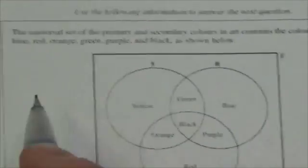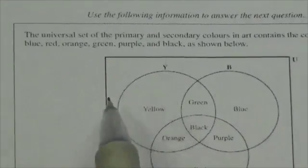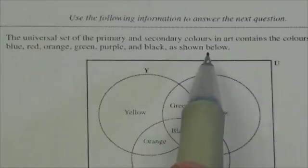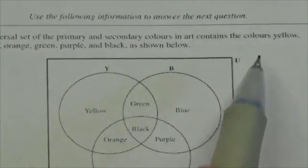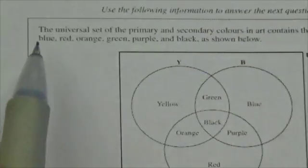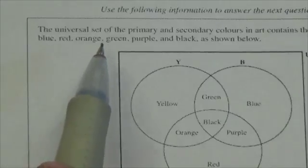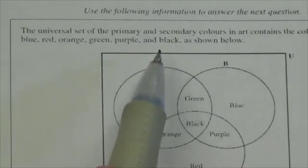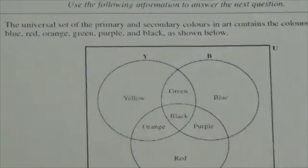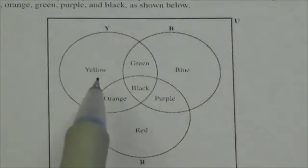Okay, now for this question, we read that the universal set of the primary and secondary colors in art consists of the colors yellow, blue, red, orange, green, purple, and black as shown below.